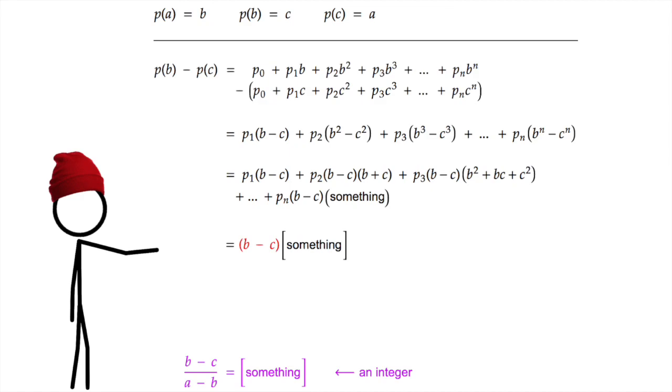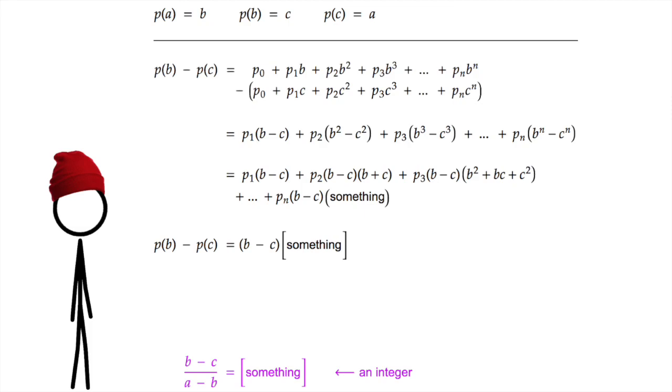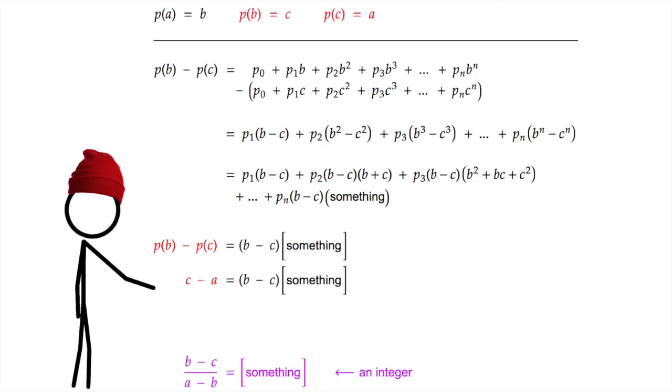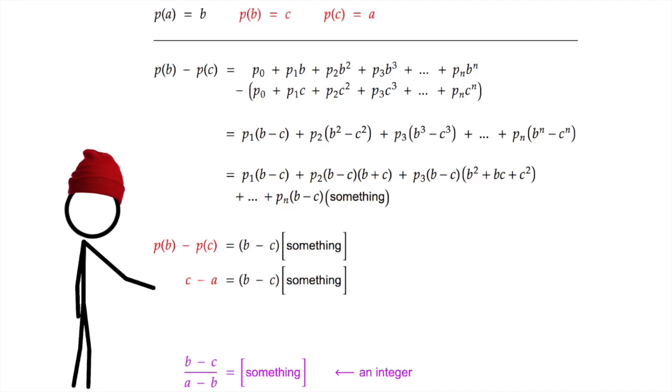So p of b minus p of c is a multiple of b minus c. But remember, p of b minus p of c, that's also c minus a. So c minus a is a multiple of b minus c. Or in other words, c minus a divided by b minus c is an integer as well.